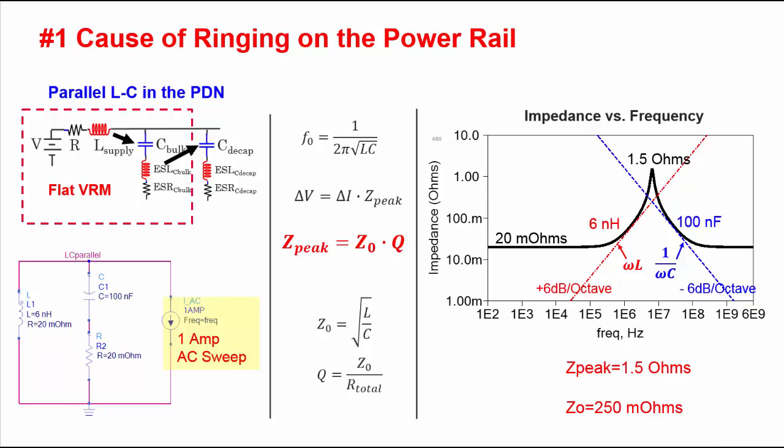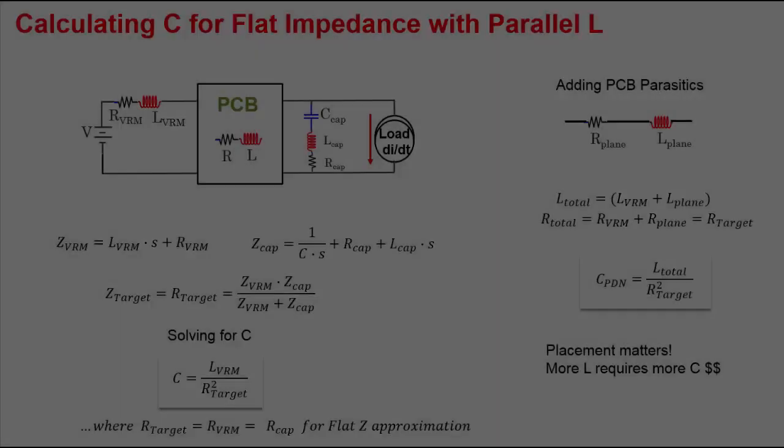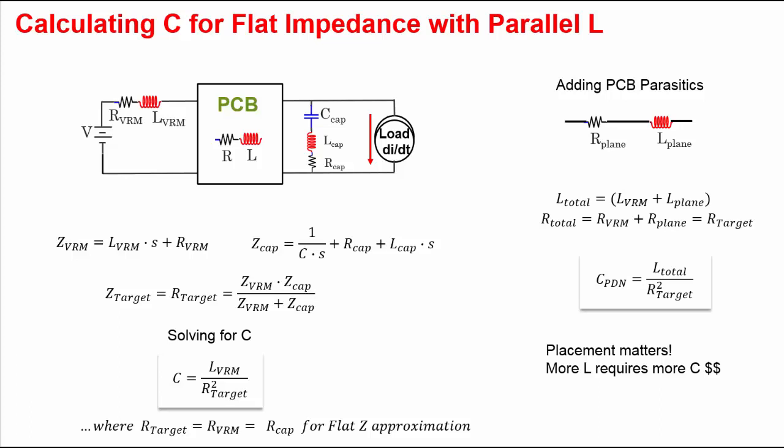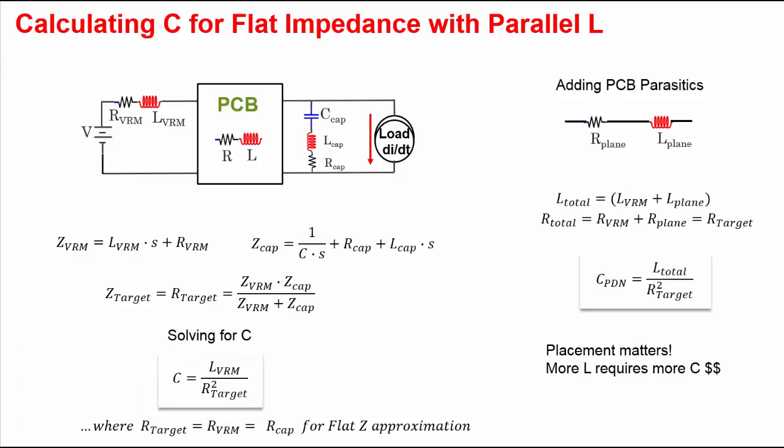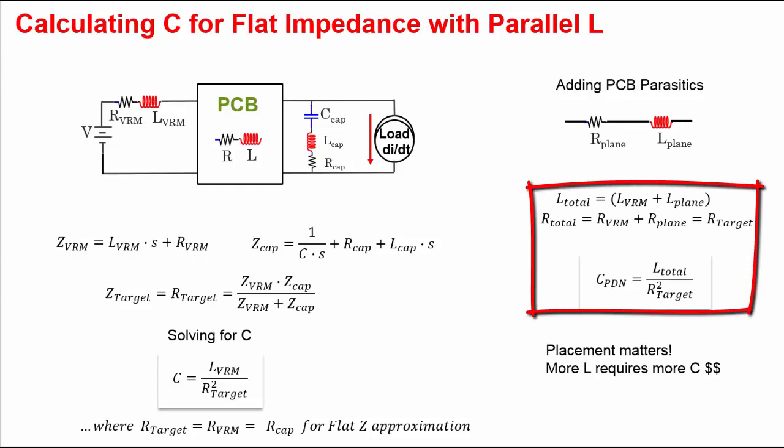I discussed this resonance in great detail in the first video, Finding Power Delivery Noise Problems. Finding the right capacitor to cancel the inductance of the VRM and deliver flat impedance is done by setting the parallel impedance of the VRM and the decoupling capacitor equal to the desired target impedance. This results in the simple equation: C equals L of the VRM divided by R-target squared. Adding printed circuit board parasitics shows that L-total will increase and require more decoupling capacitance, so be sure to use the total resistance and inductance when calculating the decoupling capacitance.